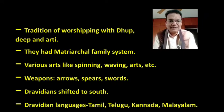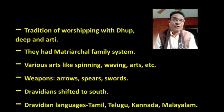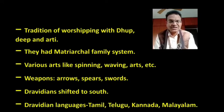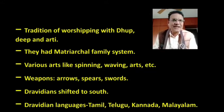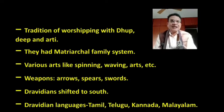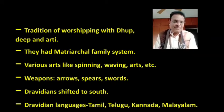These traditions are given by the Dravidian people. They were nature lovers and animal lovers, that is why they were also worshipping nature as well as animals. During their time, the matriarchal family system was developed. Various arts like spinning and weaving were developed, and they had developed weapons like arrows, spears, swords, and the building of boats, rafts, along with weaving, spinning, and dyeing.